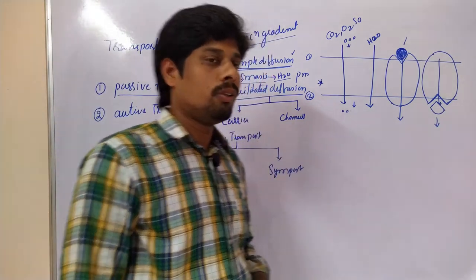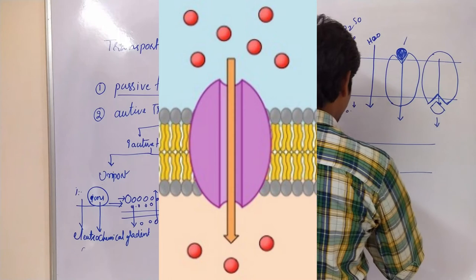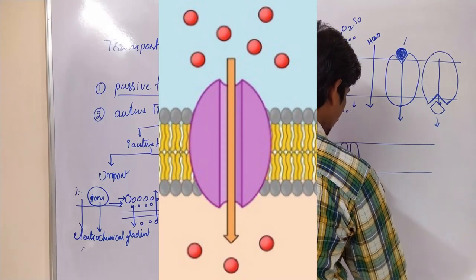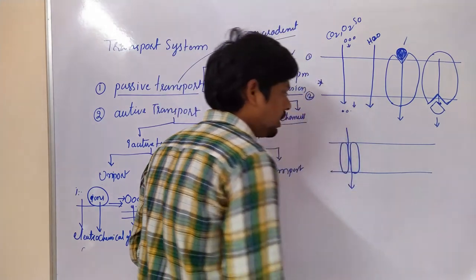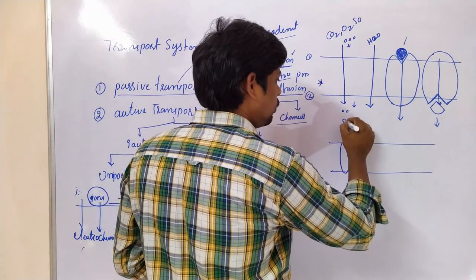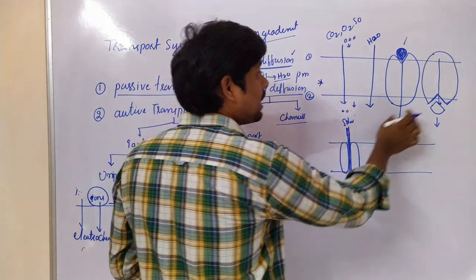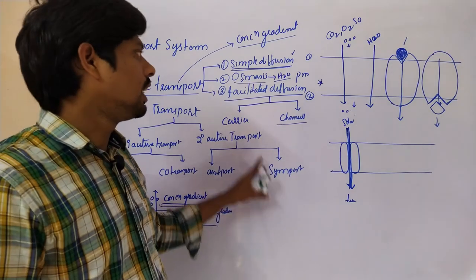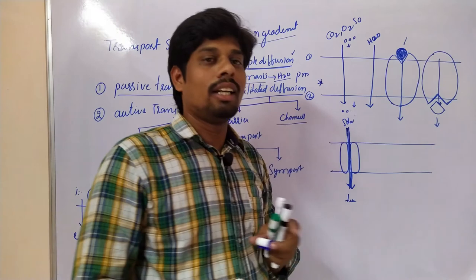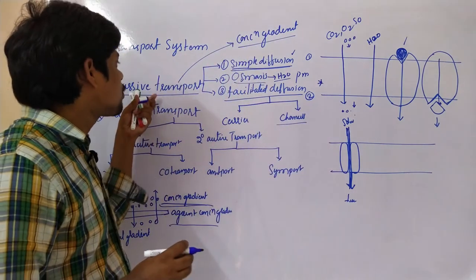Coming to channel proteins. Channel proteins are present within the plasma membrane and form a hole between their subunits. Solutes from higher concentration can move to lower concentration more easily through channel proteins than through carrier proteins. In this way, different solutes move from higher concentration to lower concentration according to the concentration gradient.